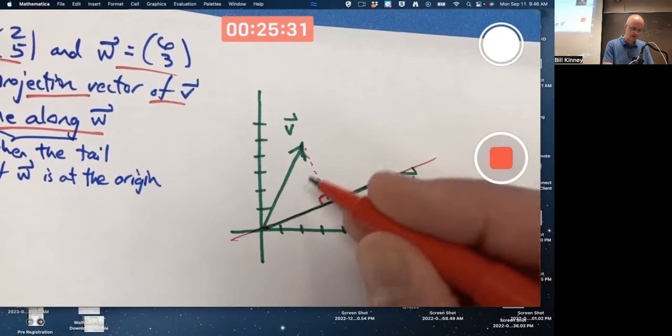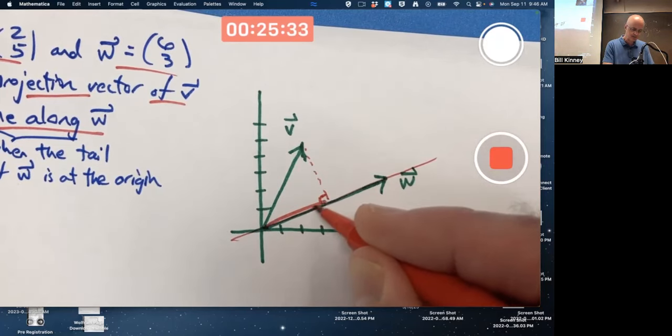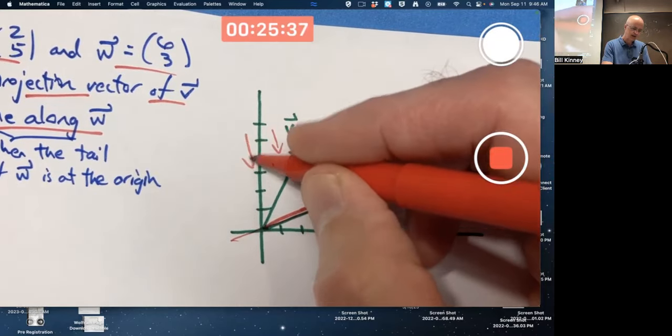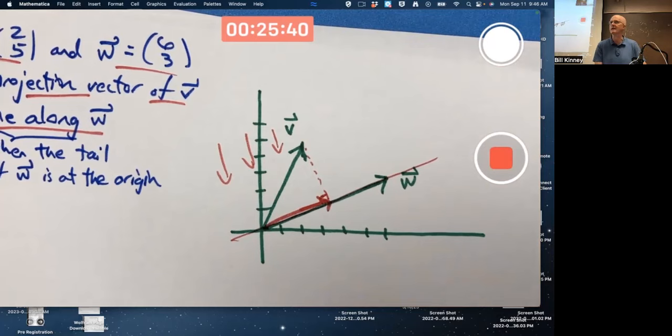And we're trying to figure out what this vector is right here. It's like the shadow of V if I have light rays coming in perpendicular to the line along W.